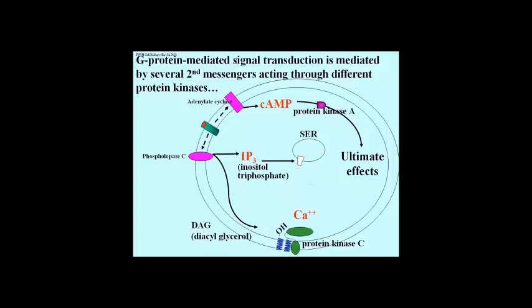The IP3 causes the release of stored calcium ions from the smooth endoplasmic reticulum in the target cell, which in turn binds to a membrane-bound protein kinase called protein kinase C, or PKC for short. At the same time, diacylglycerol, or DAG, also binds to the PKC. With both DAG and calcium bound to protein kinase C, this enzyme is fully active and initiates a phosphorylation amplification cascade leading to its own ultimate cellular response.